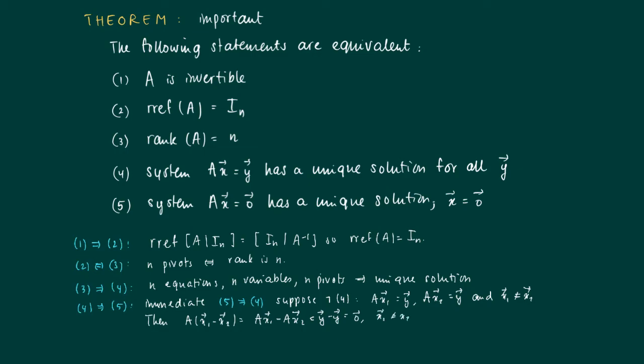So now we found a vector x1 minus x2 unequal to the zero vector, which solves Ax = 0, contradictory to what it says in statement 5. So statements 4 and 5 are equivalent.